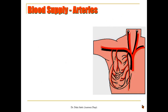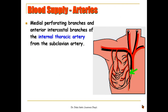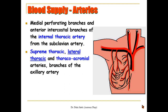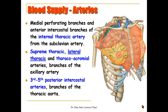For the arterial supply of the breast: from the medial side there are medial perforating branches from the anterior intercostal branches of the internal thoracic artery, which arises from the first part of the subclavian artery — this is the main blood supply. The second source is from branches of the axillary artery, including the supreme thoracic, lateral thoracic, and thoracoacromial arteries, the most important being branches from the lateral thoracic artery. Also, the lower part of the breast is supplied by branches from the third, fourth, and fifth posterior intercostal arteries, which arise from the thoracic aorta.